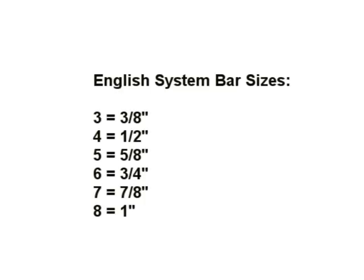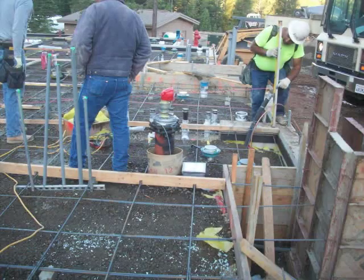Really easy, but we have to make it more complicated. So basically, if you call for number 3, it's 3 eighths. If you call number 5, it's 5 eighths. Number 6, 3 quarters, and so on. It's really simple.